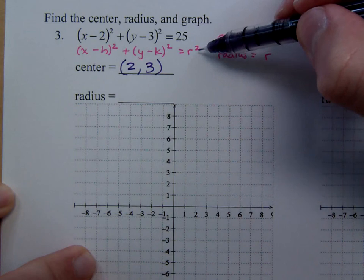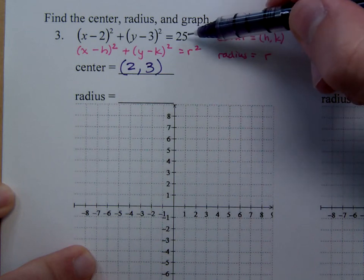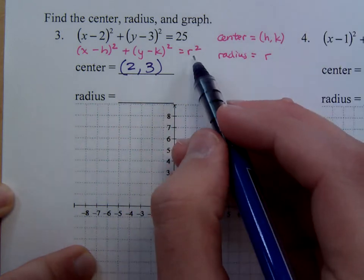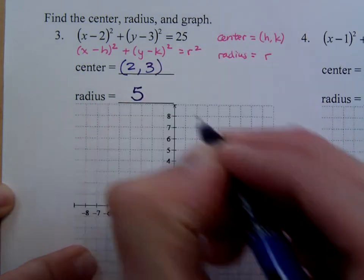Now, my r squared is 25. That doesn't mean your radius is 25, it means it's going to be the square root of that. So r squared is 25, which means r is 5.